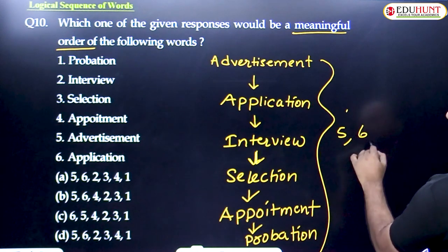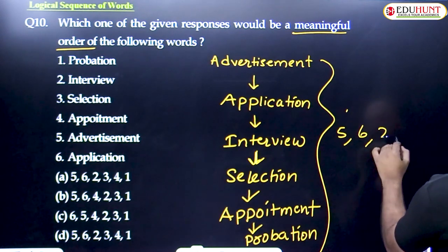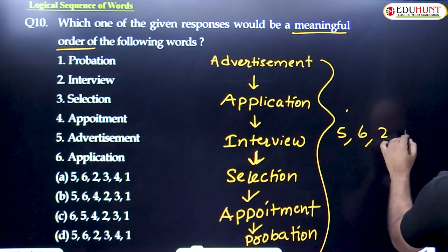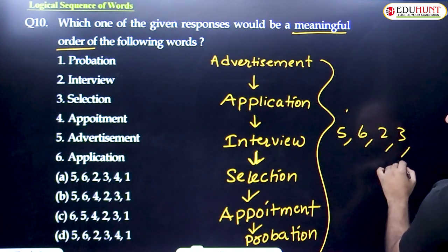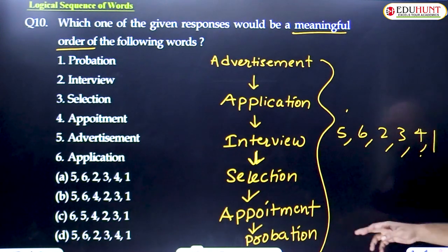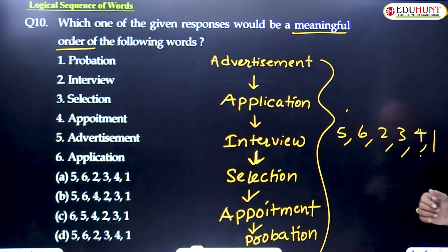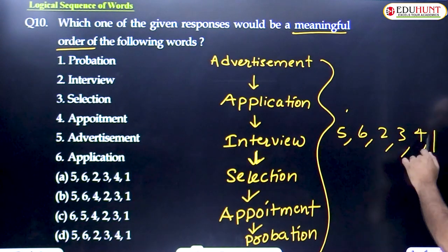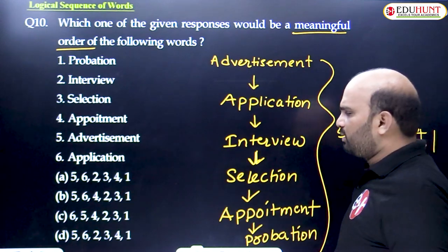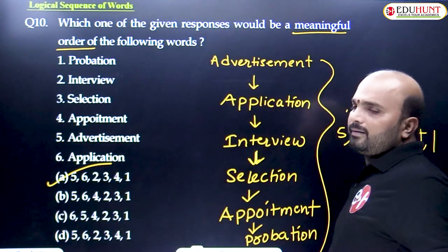Application sixth one, next interview second one, next selection third one, next appointment fourth one, last probation first one. So advertisement fifth, application sixth, interview second, selection third, appointment fourth, probation first: five, six, two, three, four, one. Option A is the right answer. Am I clear?